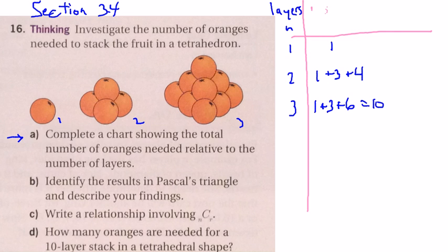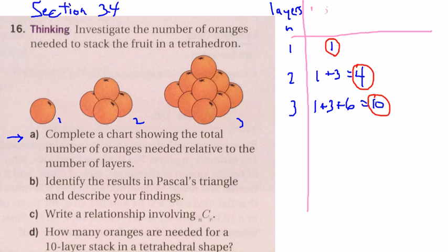I made a little mistake here — that should have said four. So our numbers here are one, four, ten. Maybe you can guess what the next one would be.